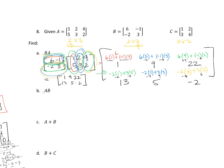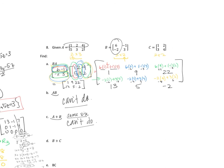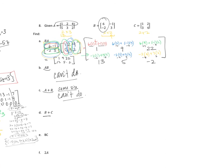For matrix AB, we can't do that because the column count of A doesn't match the row count of B. Similarly, matrix A plus B can't be done because they're not the same size. Remember: for addition, matrices must be exactly the same size — we just add corresponding entries.